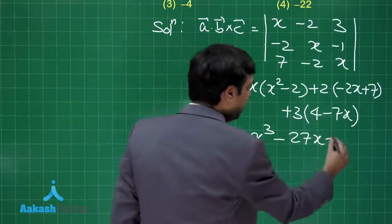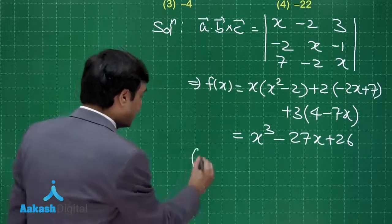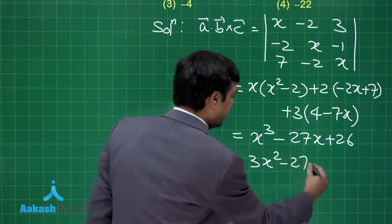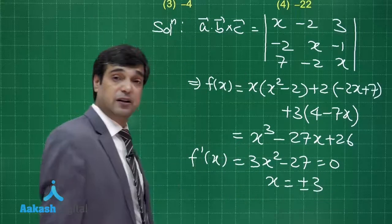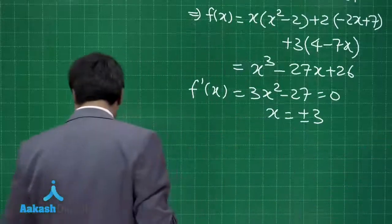So this is the function f(x). Find its derivative: this is 3x squared minus 27. Setting it to 0 we get x equals plus minus 3. This is clear.